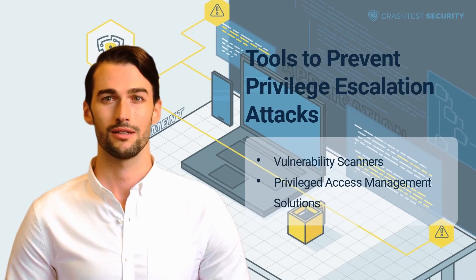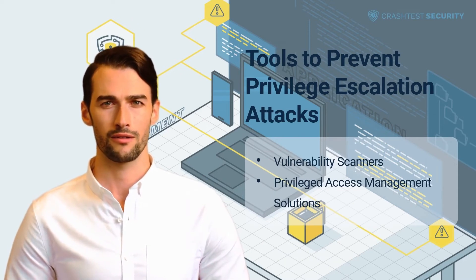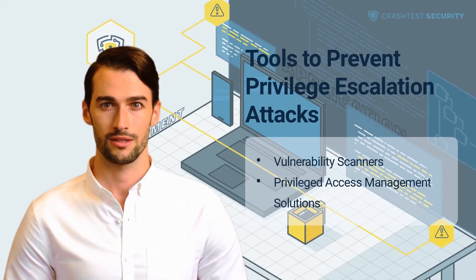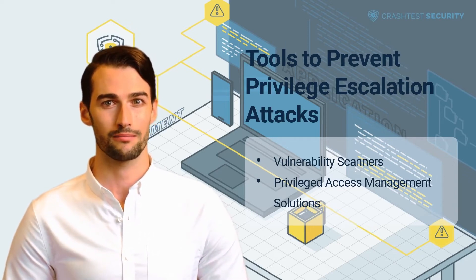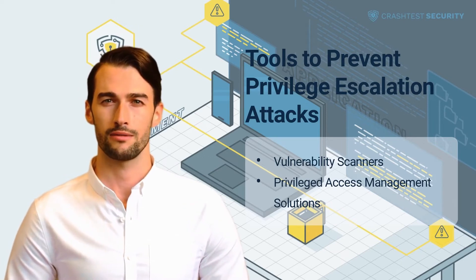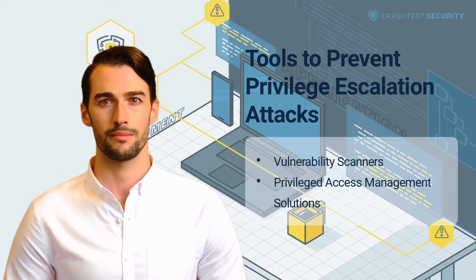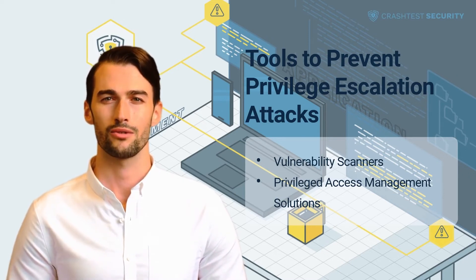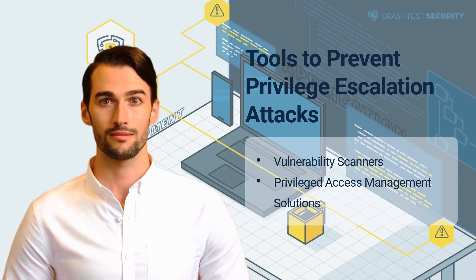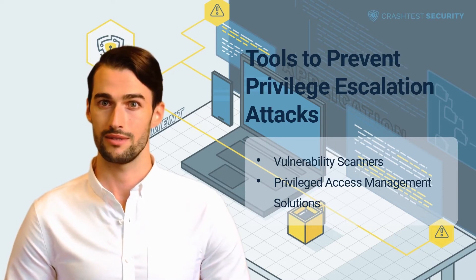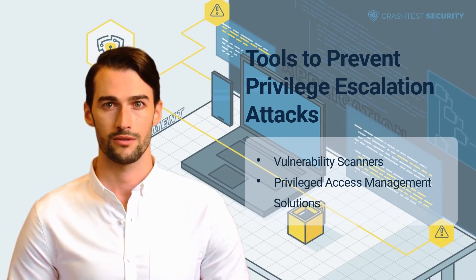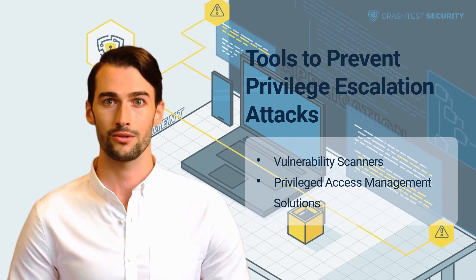Preventing privilege escalation is easier when you use tools that cover different aspects of security enforcement in response to different threat vectors. In a typical system, the prevention of attacks involves a combination of different tools. Vulnerability scanners enable the automatic identification and creation of an IT asset inventory to check whether networks, machines, and applications are susceptible to attacks.